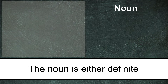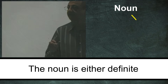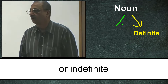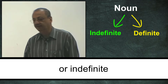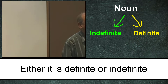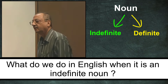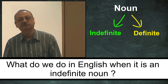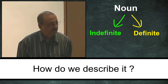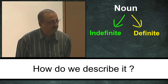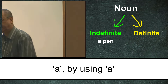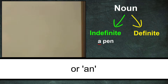The noun is either definite or indefinite. Brothers and sisters, either it is definite or indefinite. What do we do in English when it is an indefinite noun? How do we describe it? By using 'a' or 'an'.